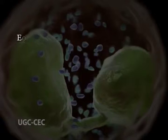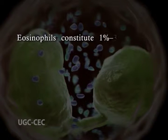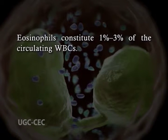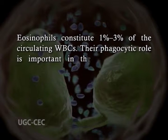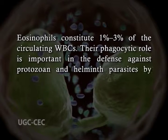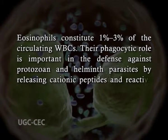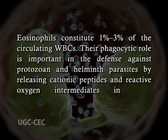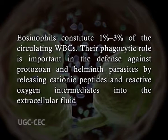Like macrophages, neutrophils are active phagocytic cells that release antimicrobial substances. Neutrophils also express Fc receptors, and the granules in neutrophils contain lytic enzymes and bactericidal substances. Eosinophils have a bilobed nucleus with granulated cytoplasm that stains with the acid dye eosin red. Eosinophils are weakly phagocytic cells that migrate from the blood to the tissue and constitute 1 to 3% of the circulating WBCs. Their phagocytic role is important in the defense against protozoans and helminth parasites by releasing cationic peptides and reactive oxygen intermediates into the extracellular fluid.